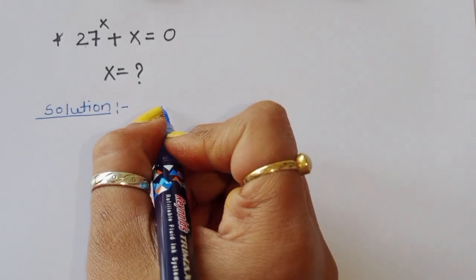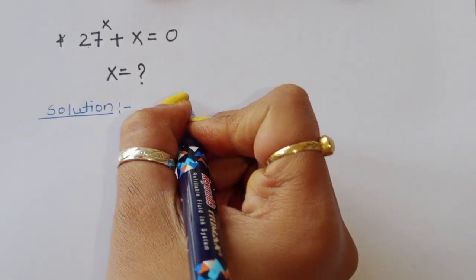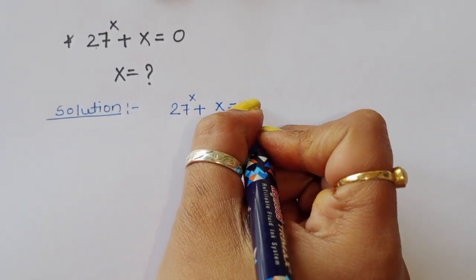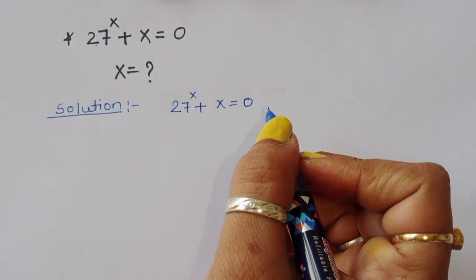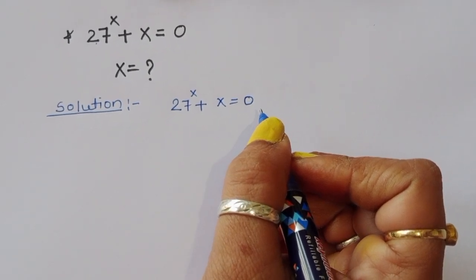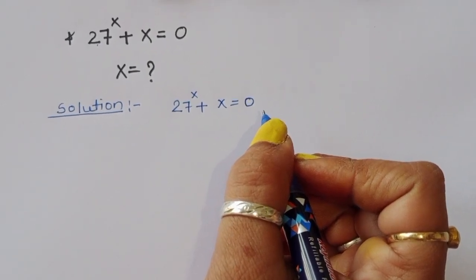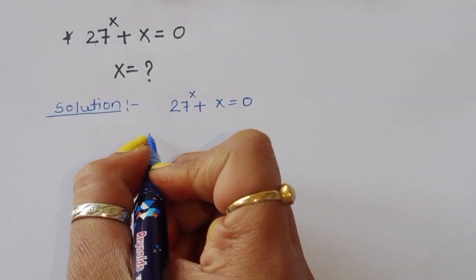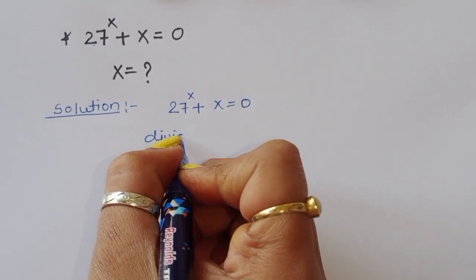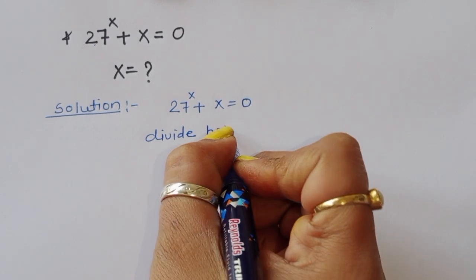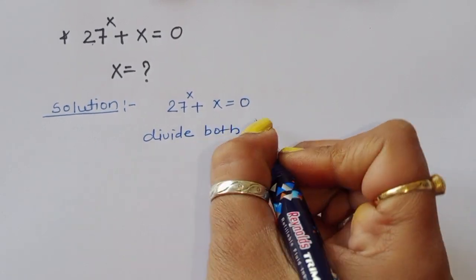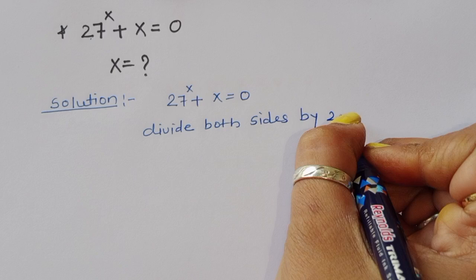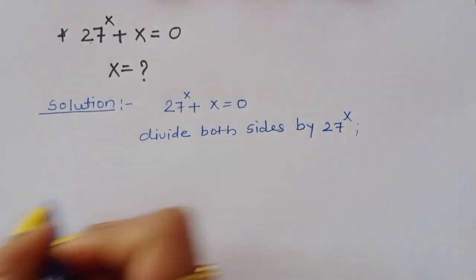27 power x plus x is equal to 0. We can do one thing here — divide both sides by 27 power x.